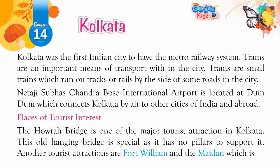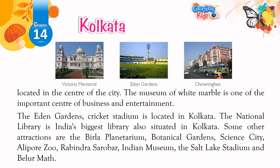Places of Tourist Interest. The Howrah Bridge is one of the major tourist attractions in Kolkata. This old hanging bridge is special as it has no pillars to support it. Other tourist attractions are Fort William and the Maidan, located in the centre of the city. The Victoria Memorial, a museum of white marble, is one of the important centres of business and entertainment.